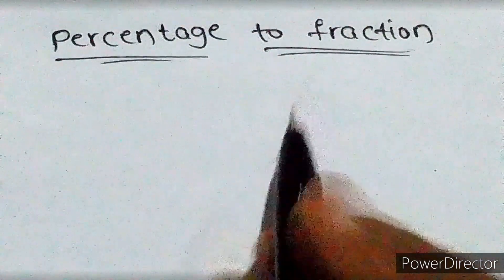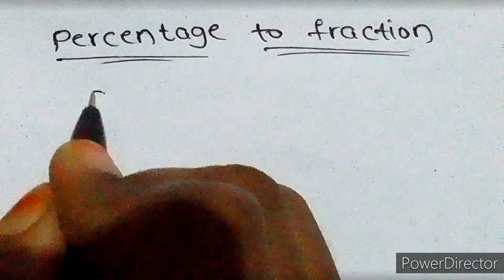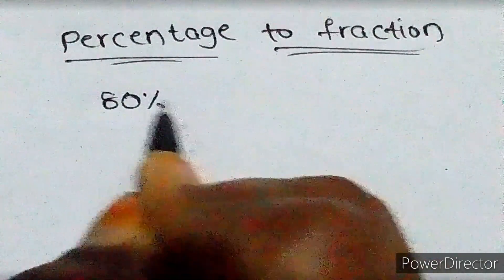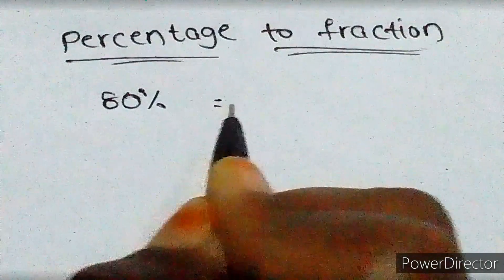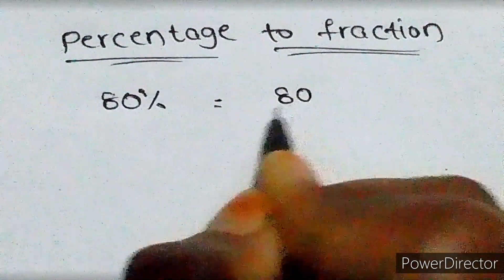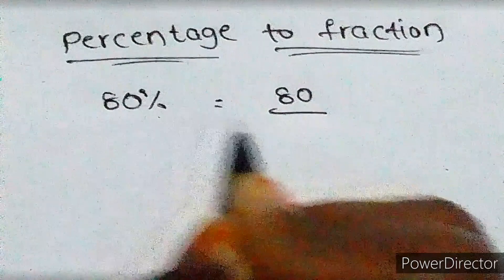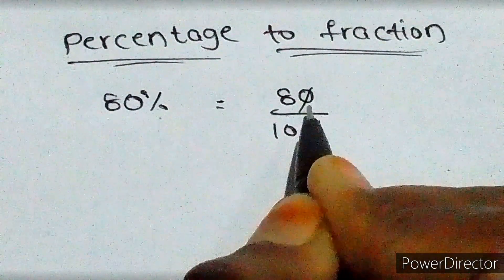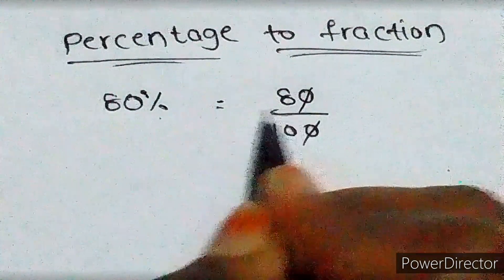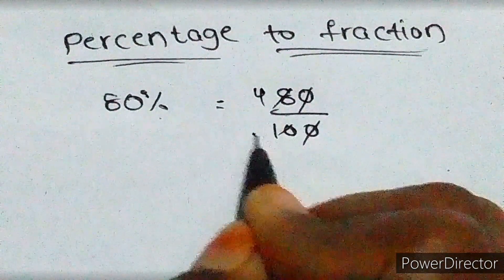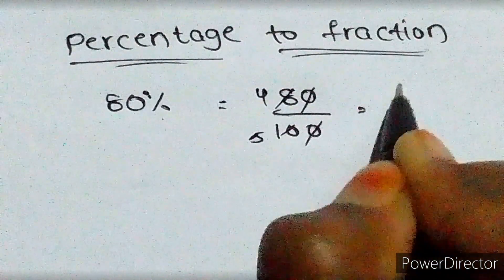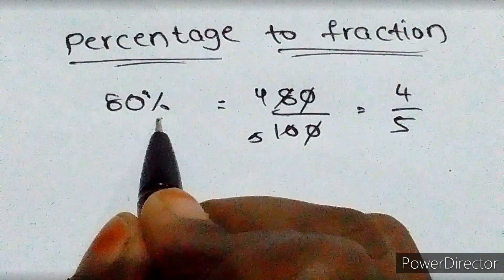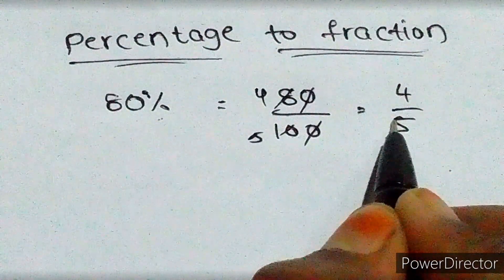Now let's do the applications. First: converting percentage to fractions. The percent sign means divided by 100. For example, 80% = 80/100. Now let's simplify — cancel the zeros: 8/10, then divide by 2 to get 4/5. So 80% = 4/5.